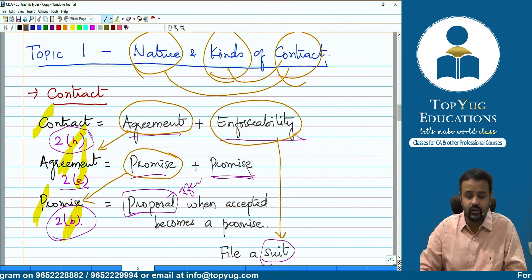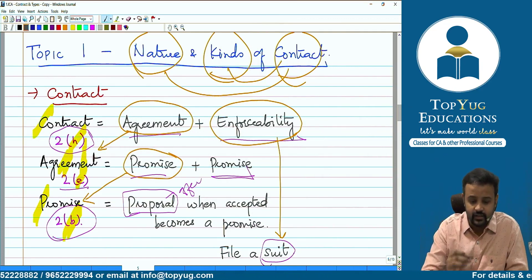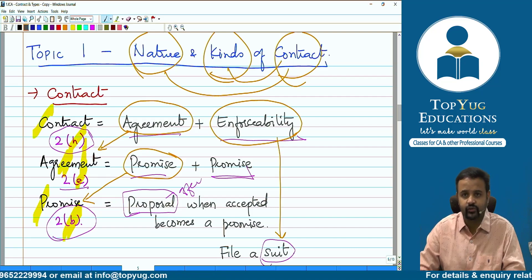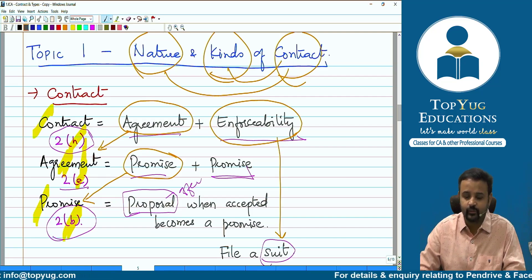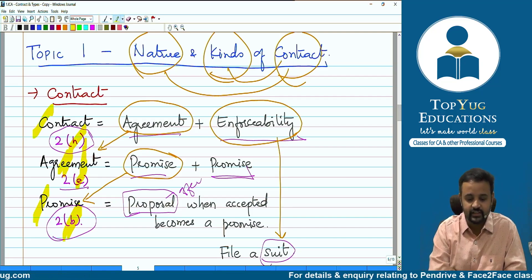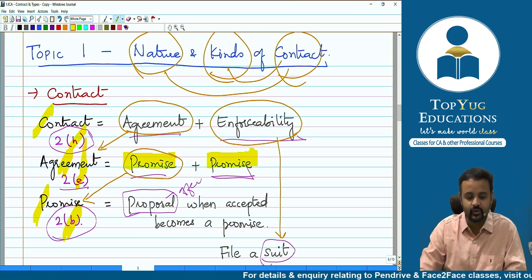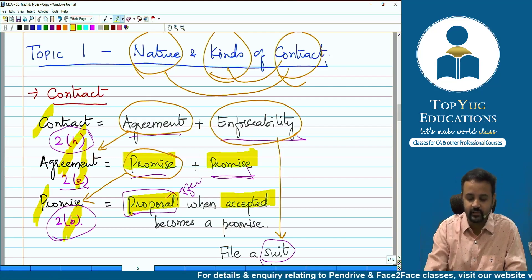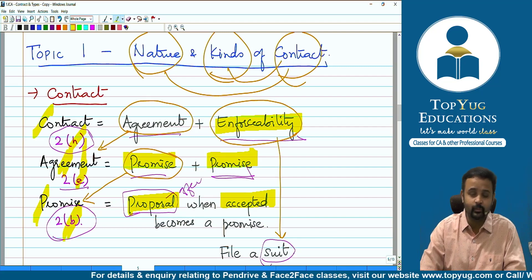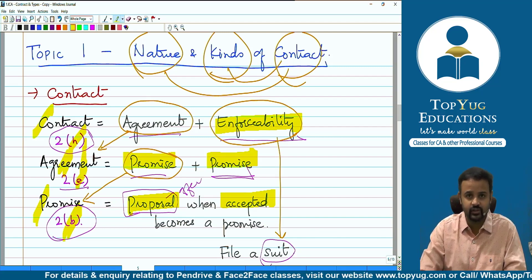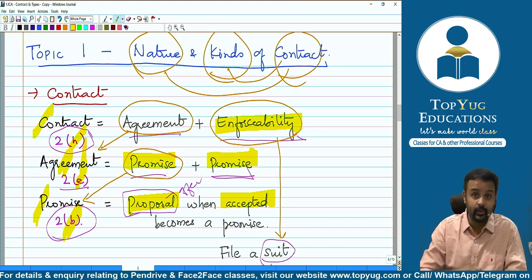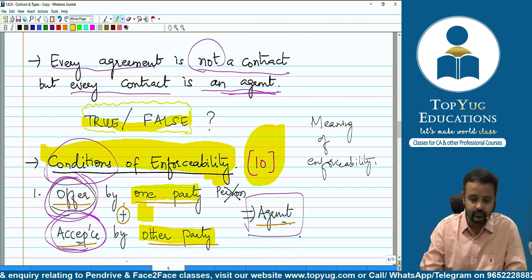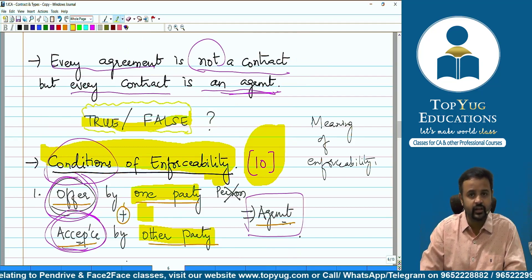The definition of contract: Section 2(h) says an agreement which is enforceable by law is a contract. An agreement is a promise and every set of promises forming consideration for each other. Promise plus promise equals agreement. An offer when accepted becomes a promise. Enforceability means filing a suit in the court of law and the court compelling the parties to perform. Not every agreement is a contract, but every contract is necessarily an agreement.